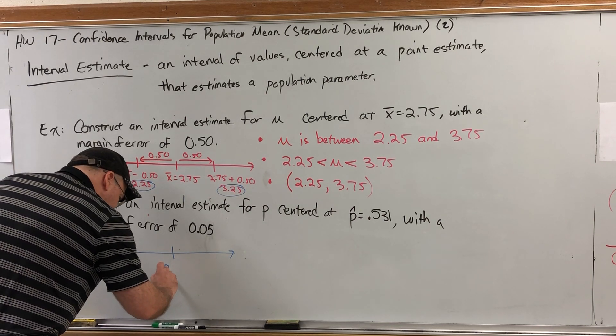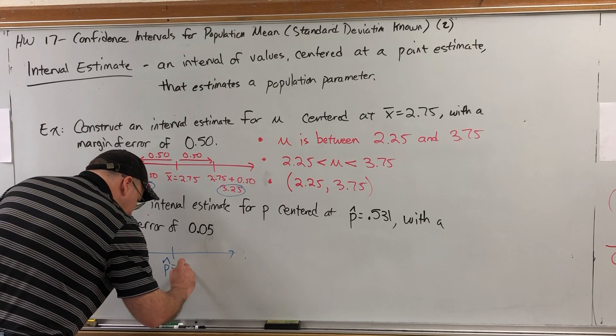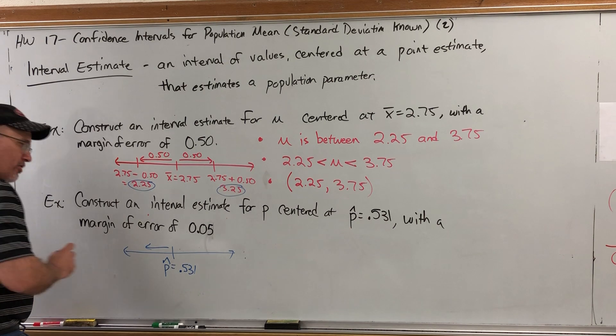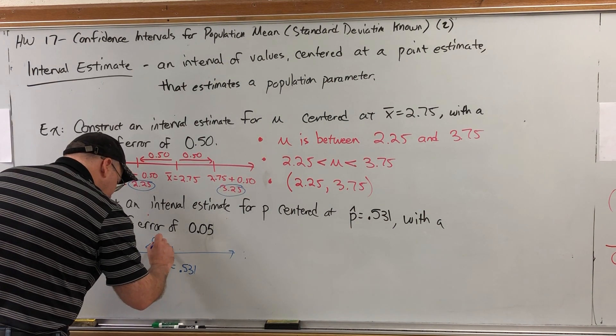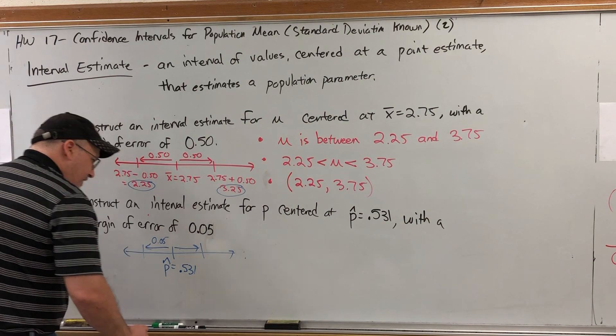The margin of error says go to the center of your interval, which in this case is p hat equals 0.531, and then go to the left whatever the margin of error is, in this case 0.05, and go to the right whatever the margin of error is.